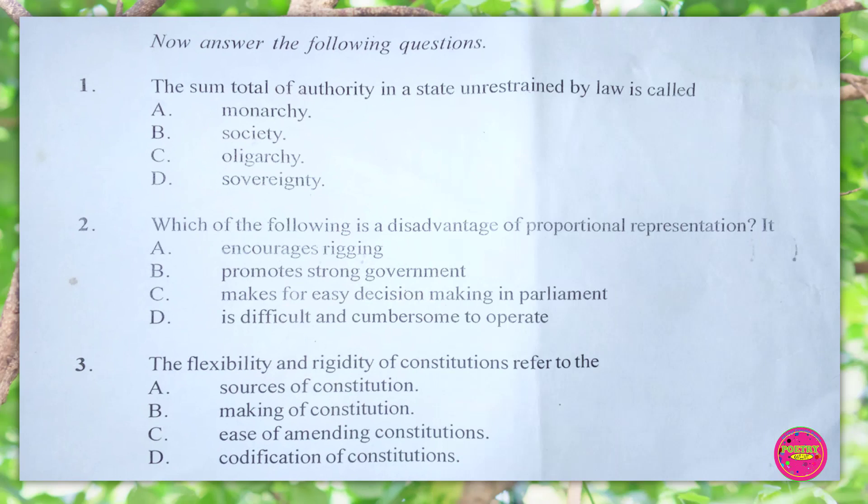Question 1. The sum total of authority in a state unrestrained by law is called: A. monarchy, B. society, C. oligarchy, D. sovereignty. The correct answer is D. sovereignty.